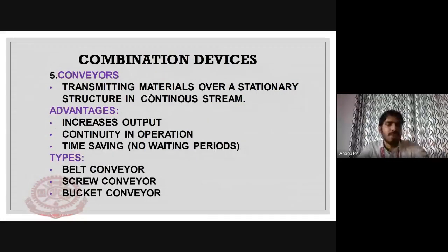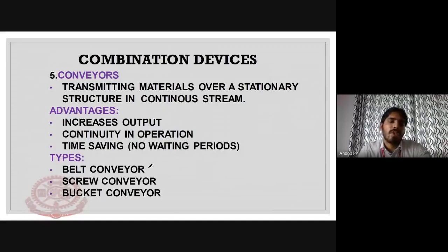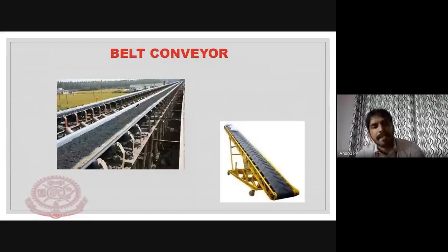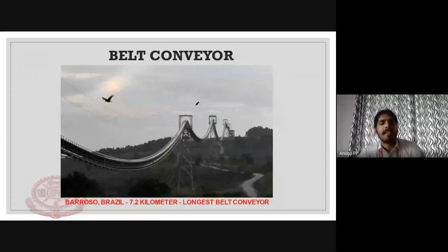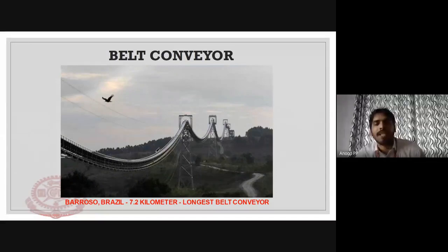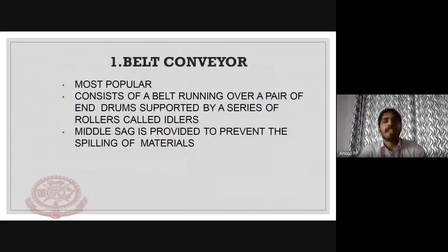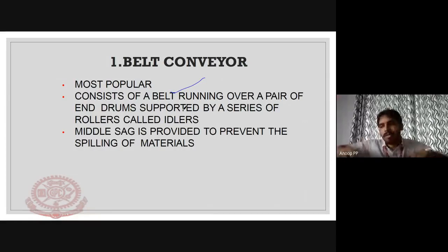Now we come to conveyors. Conveyors can be of three types: belt conveyors, screw conveyors, and bucket conveyors. The belt conveyor is best used for transportation of material over distances of up to 8.20 kilometers. It consists of a belt running over a pair of end drums and supported by a series of rollers, with a sag provided to prevent spilling of material.